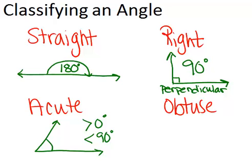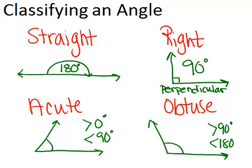An obtuse angle is the other option. It's an angle that's between 90 degrees and 180 degrees. So this would be one example of an obtuse angle. It's clearly bigger than 90 degrees, but it's less than 180 degrees.